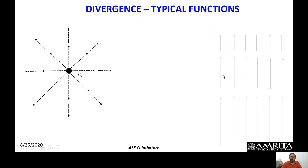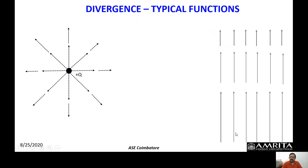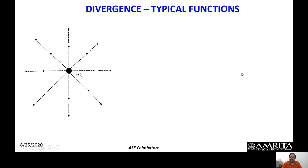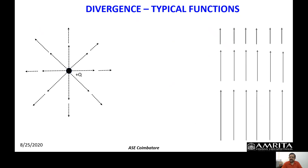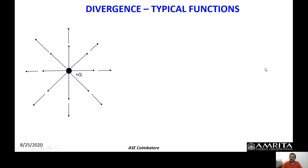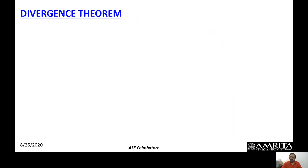Consider a vector function where field lines go in the positive z-direction but the magnitude varies. The difference from the previous uniform case is that here the magnitude is changing while the direction remains the same. Whenever a vector function is changing, there is a nonzero divergence. In the uniform case, magnitude and direction are the same everywhere, so no spread. When magnitude changes and direction is constant, there is a net divergence.